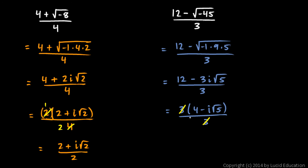I can cancel a factor of the numerator with this denominator, but not a term or a piece of a term. And so I end up with 4 minus i root 5 for the answer.